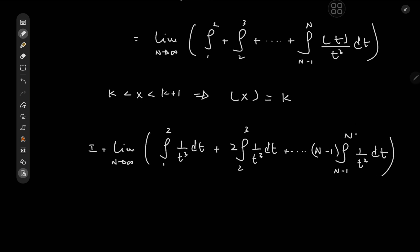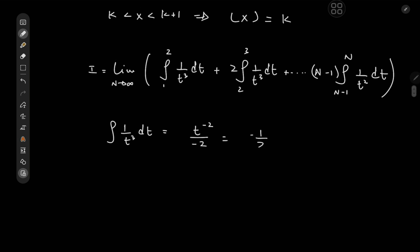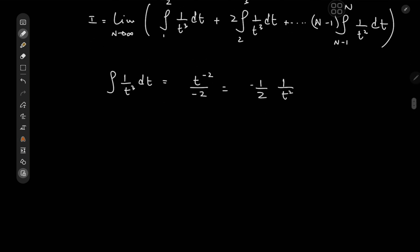So we have a lot of integrals of 1 over t cubed which are pretty easy to solve. The integral of 1 over t cubed with respect to t equals t to the negative 2 divided by negative 2. So we have negative 1 half times 1 over t squared for all of our integrals. Okay, cool.